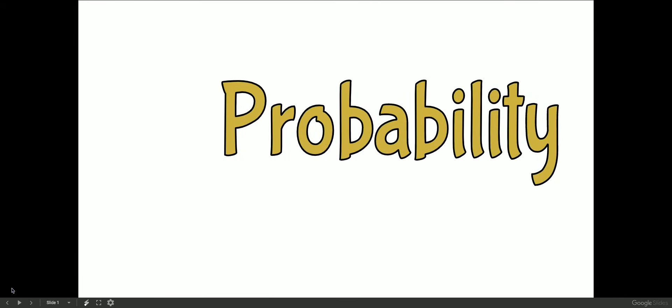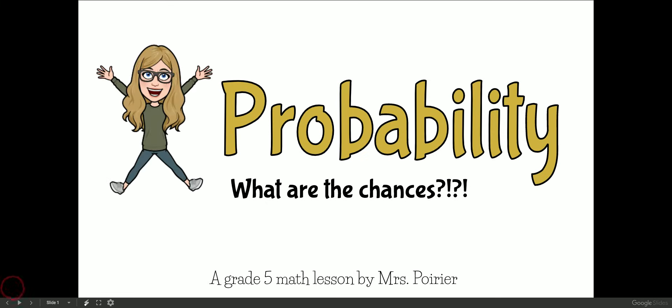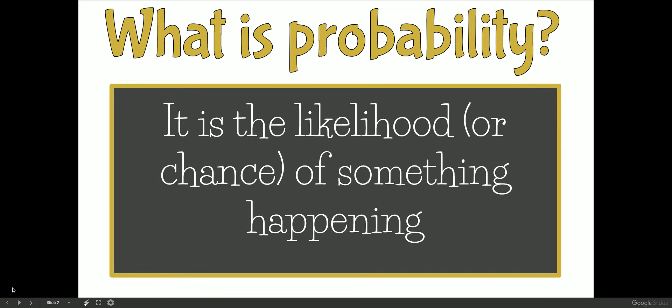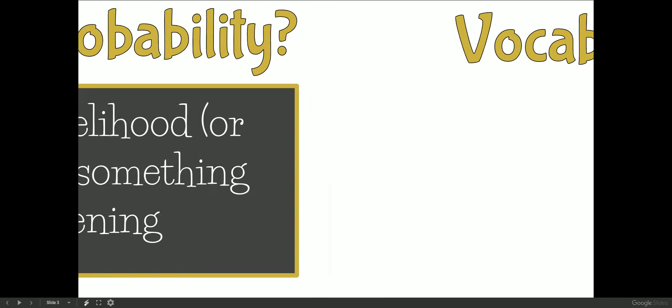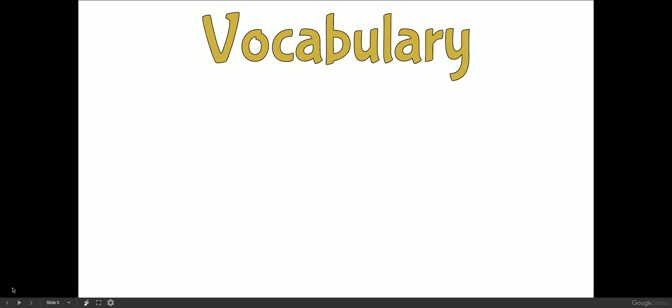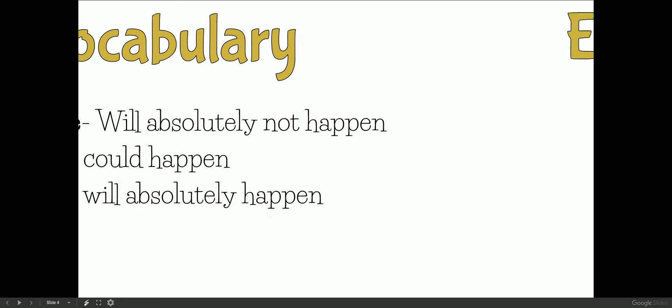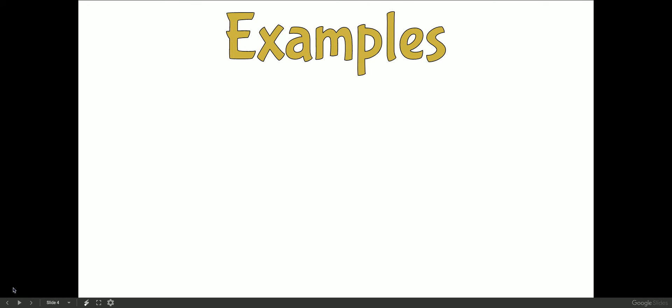Today's lesson is on probability - what are the chances. So what exactly is probability? Probability is the likelihood or the chance of something happening. Some important vocabulary we need to know: impossible means it will absolutely not happen, possible means it could happen, and certain means it absolutely will happen. So here are some examples.